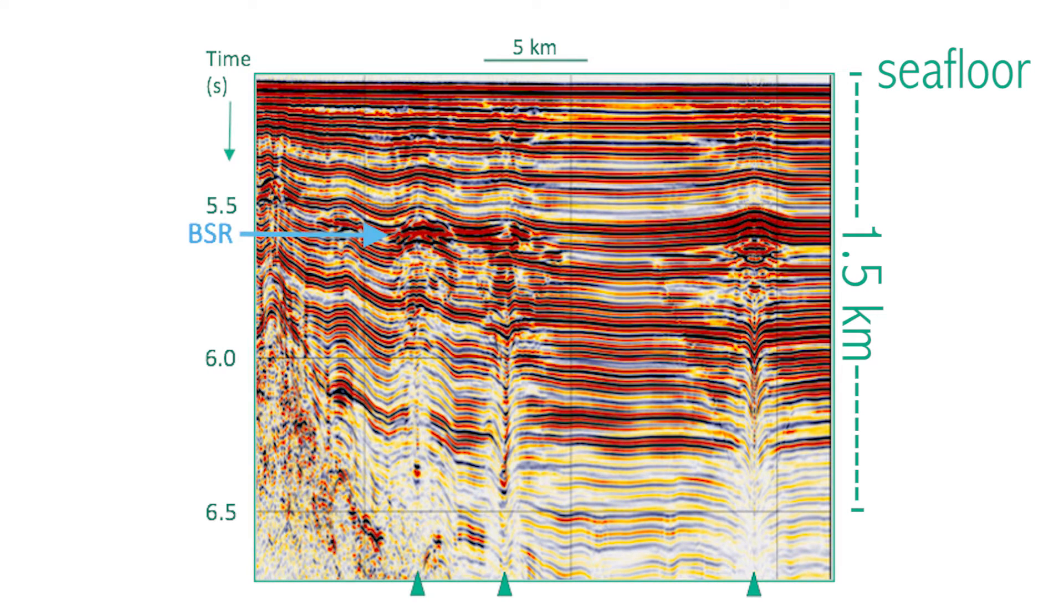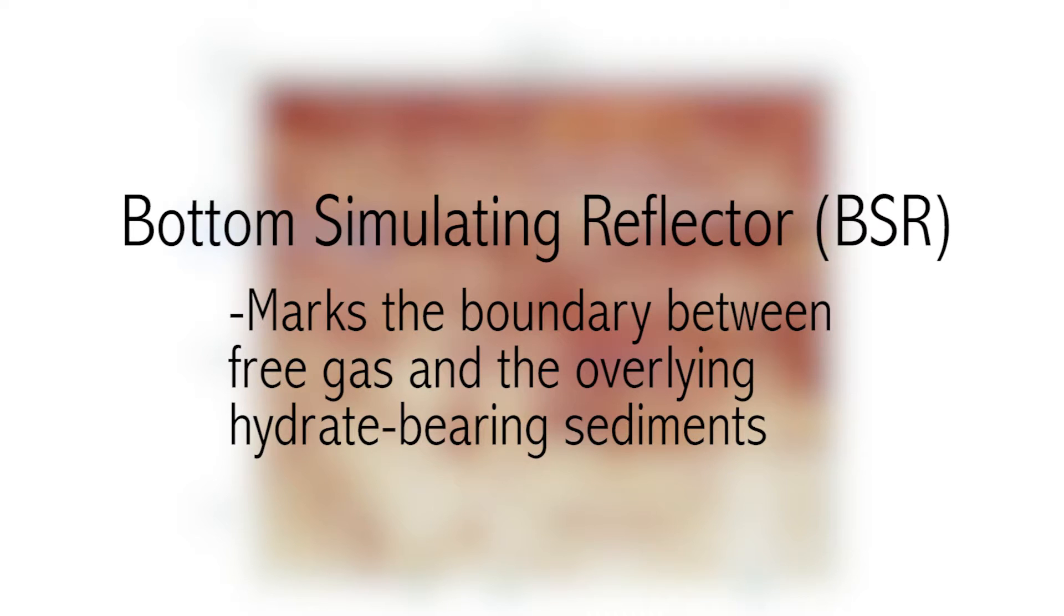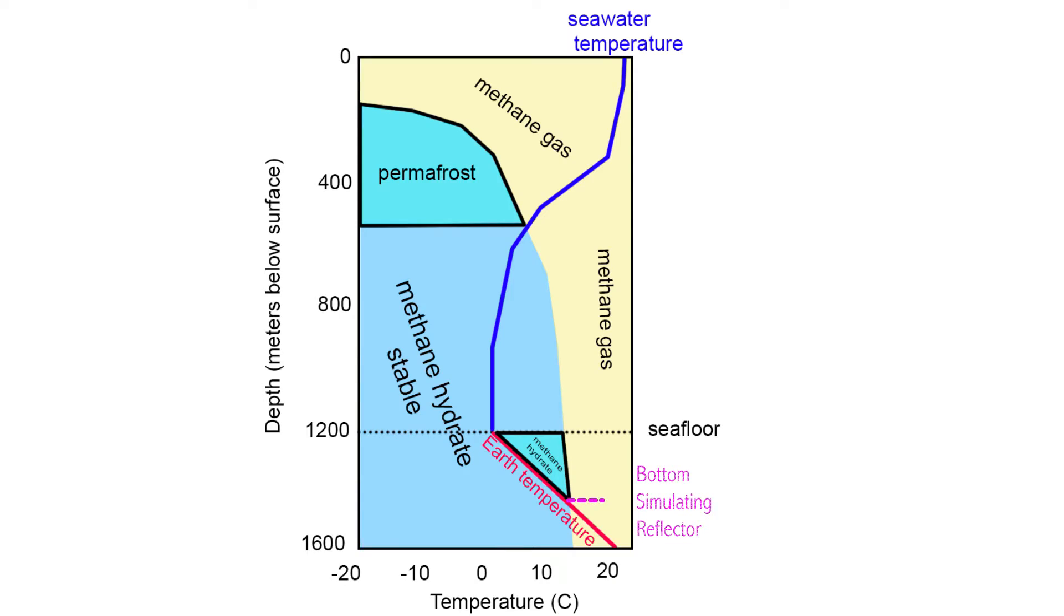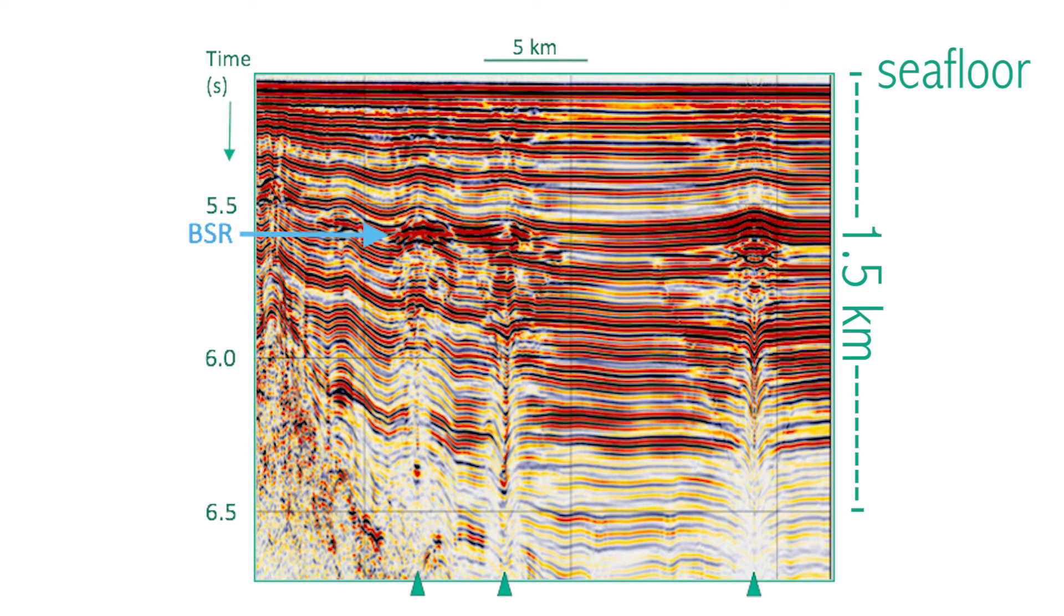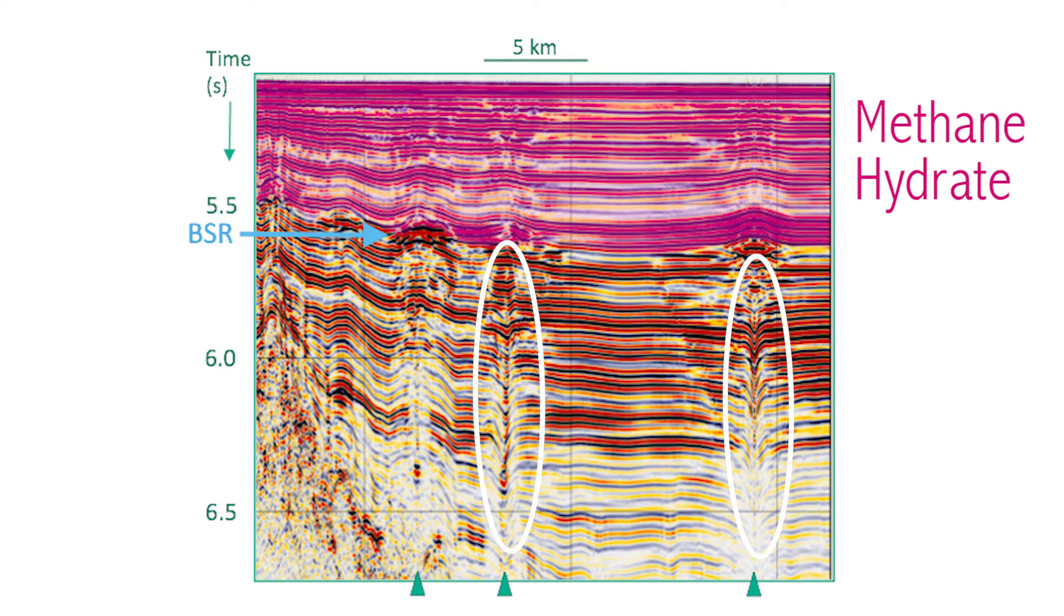In marine settings, seismic profiles have shown something called a bottom simulating reflector, which shows the crossover from methane hydrate to gas in the phase diagram. In the seismic profile, we can see columns where the velocity drops because the waves are hitting gas. We have found that the presence of a bottom simulating reflector can mean that methane hydrate exists on top of the reflector and gas exists underneath.